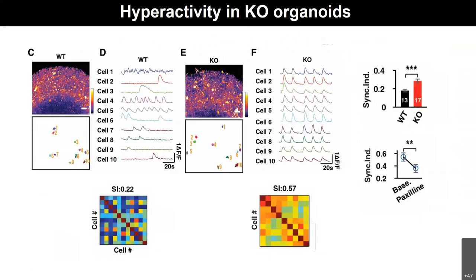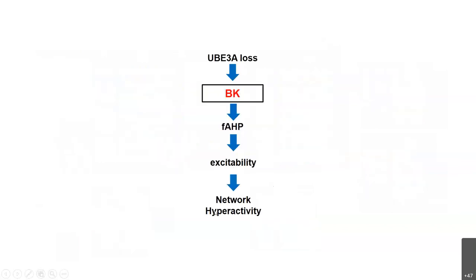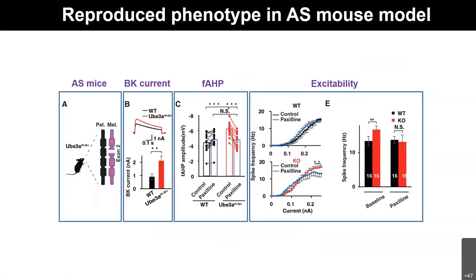Having 3D organoids allowed us to look at network analysis more carefully using calcium imaging. Using calcium imaging, we showed that the synchrony index — which reflects network-level simultaneous firing of different neurons — is actually increased in the knockout compared to the wild type, again highlighting the network hyperactivity of the organoids. But the patient has epilepsy — how do we have epilepsy in a dish? That's a fundamental question we cannot address with the methods described so far. So we went back to animals: we obtained an Angelman mouse model from the University of North Carolina and validated that the knockout mice are prone to epilepsy, finding increased BK current and FAHP in hippocampal neurons and increased neuronal excitability.